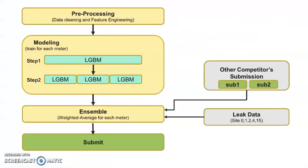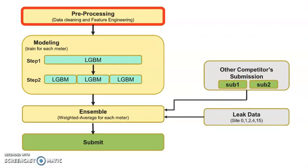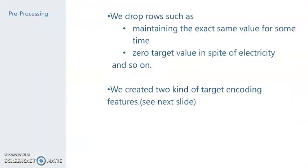This video shows you the process of our solution based on this figure. Firstly, we talk about pre-processing. Broadly speaking, we did two things as pre-processing. The first one is drop-add row. The second one is two kinds of special target encodings. We will describe our two special target encodings in detail.